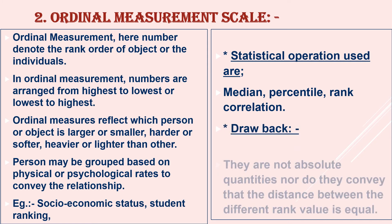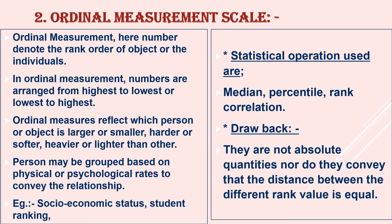The major drawback of ordinal data is they are not absolute quantities nor do they convey that the distance between the different rank value is equal. In the sense, there is no equal distance between the values. But we arrange the data in an order, maybe lower to higher or higher to lower.